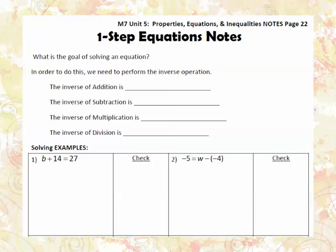Hi there. Now that we know the parts of an equation, let's talk about how to solve one-step equations. I'm on page 22 in your binder. We always have to ask ourselves, what is the goal of solving an equation? The goal is to get the variable, which is the letter, by itself. Another way you can say that is to isolate the variable.